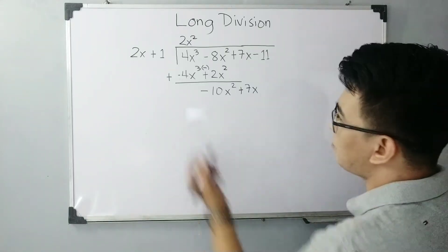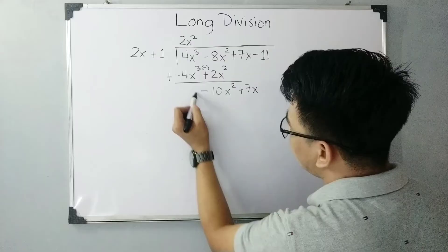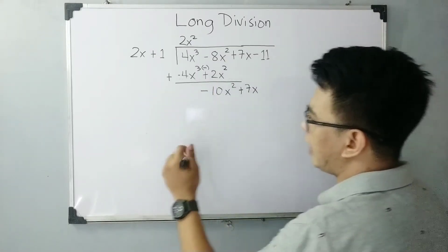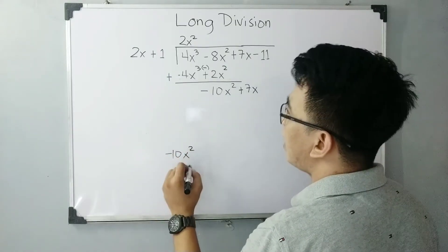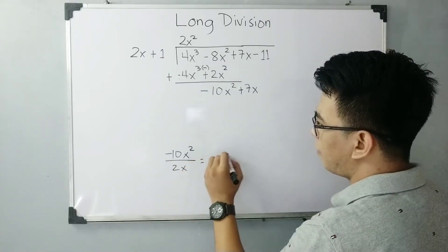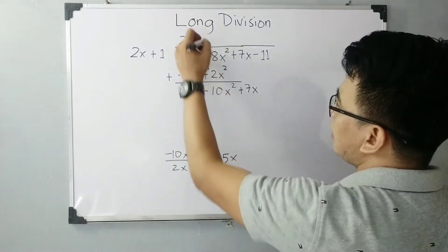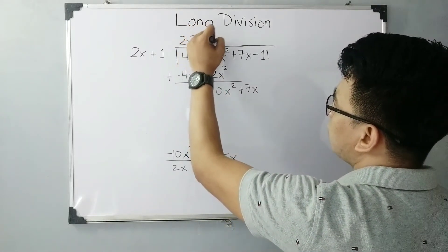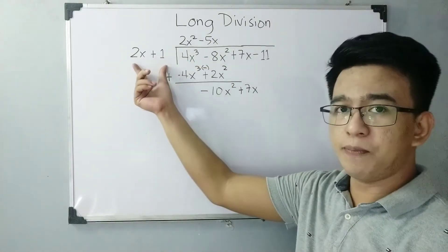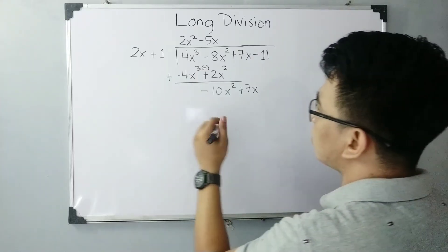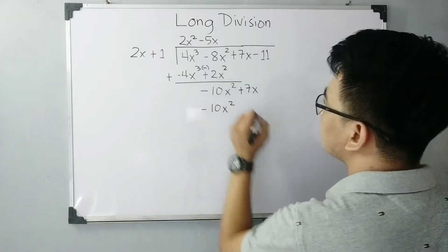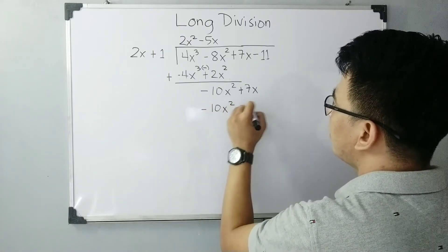Our next step — just repeat the same process. This is the first term of your new dividend. Divide negative 10x squared by the first term of the divisor, which is 2x, and it gives us negative 5x. So we write minus 5x in the quotient. Now multiply negative 5x by the entire divisor polynomial, and that results in negative 10x squared minus 5x.